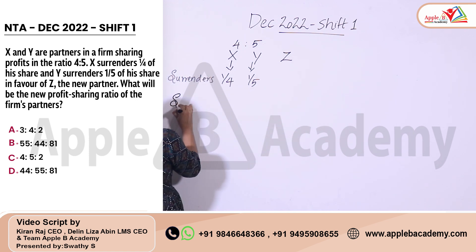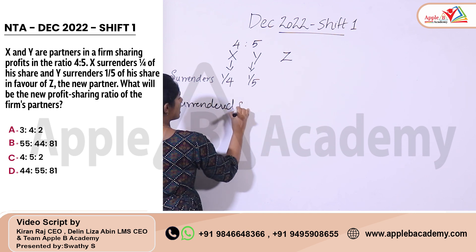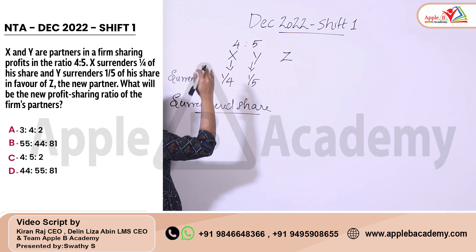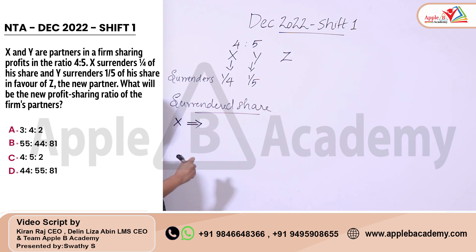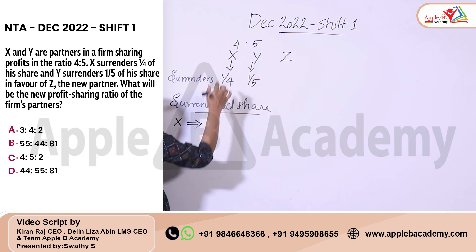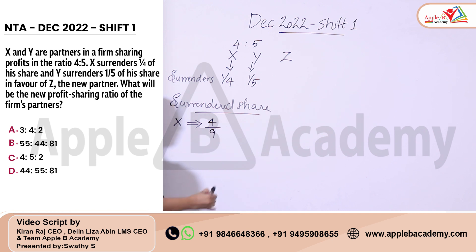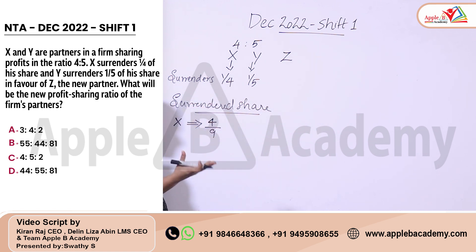What we have to do first is find the surrendered portion — the surrender share for X and Y. The old profit sharing ratio is 4 to 5, so X's share is 4/9. X surrenders 1/4th of his share, so X's sacrifice is 4/9 × 1/4.